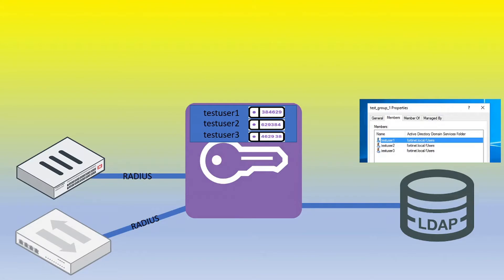Here is the topology we are trying to achieve. We will have devices like a FortiGate acting as a RADIUS client. The FortiAuthenticator imports user information from an LDAP server — in this case, three users in one group. It associates those users with a token, and any RADIUS request coming in will prompt for username and password credentials, which are validated against the LDAP server, plus a second factor which is the FortiToken, handled between the RADIUS client and the FortiAuthenticator.